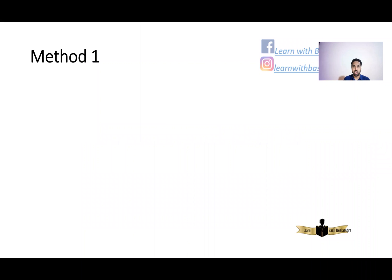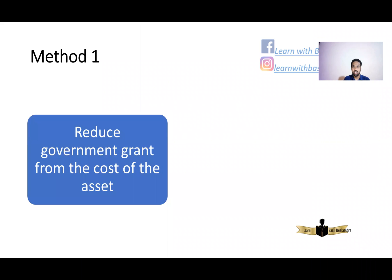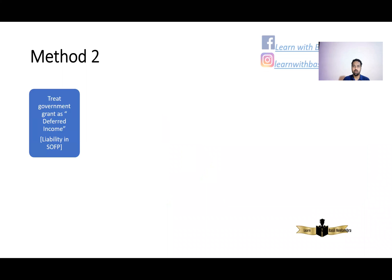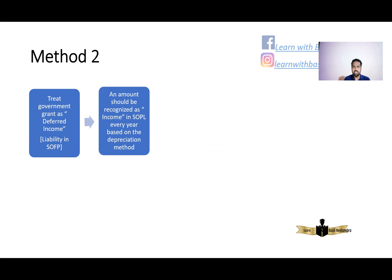Accounting for government grant can be done under two methods. Method one: the government grant should be reduced from the cost of the asset and depreciate this reduced cost. Method two: treat the government grant received as a deferred income. Deferred income will be shown as a liability in the Statement of Financial Position, and an amount equal to the depreciation method should be recognized as income in the Statement of Profit or Loss.